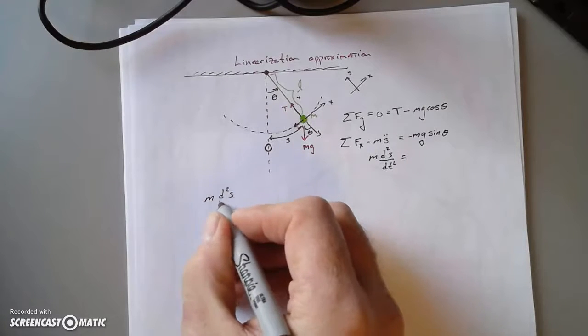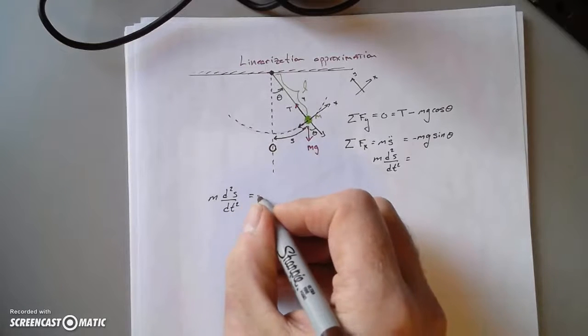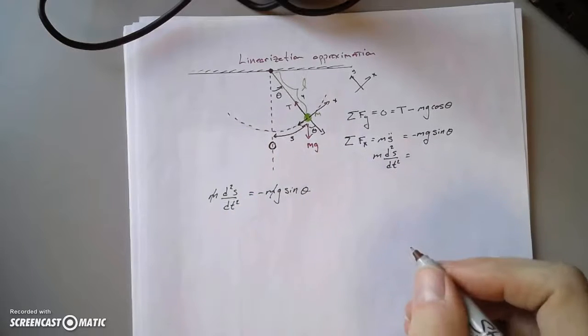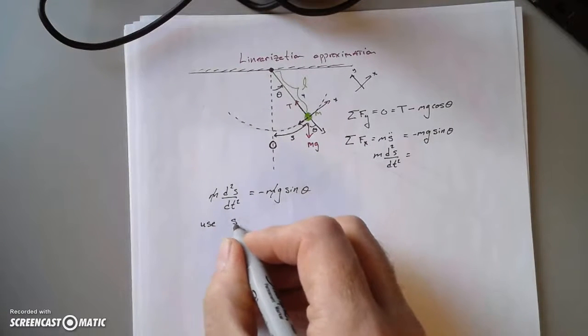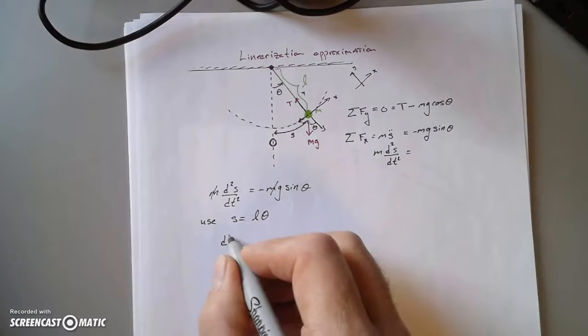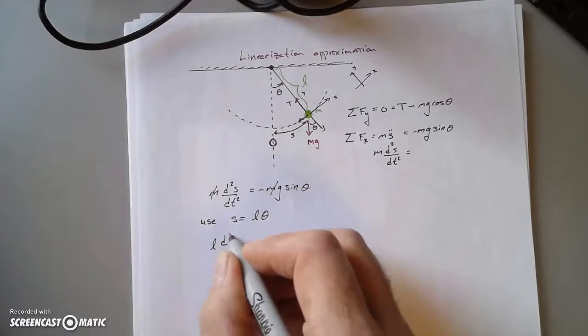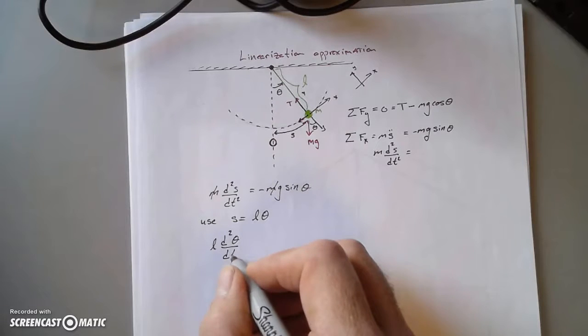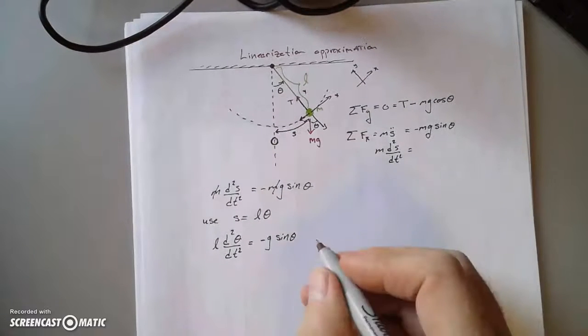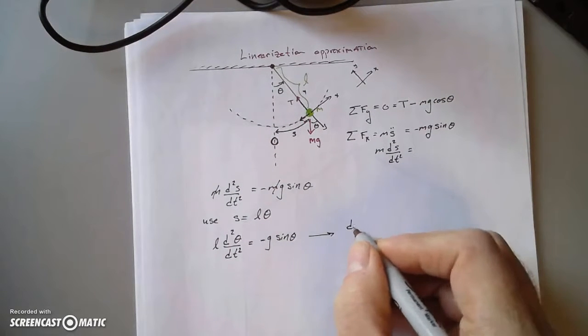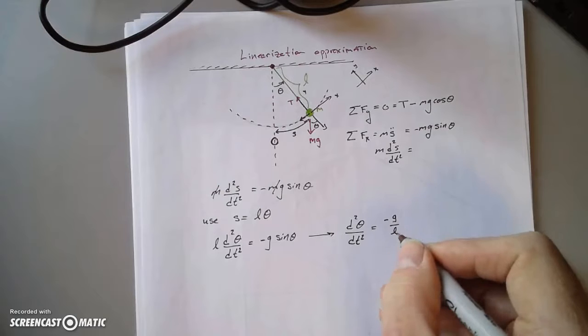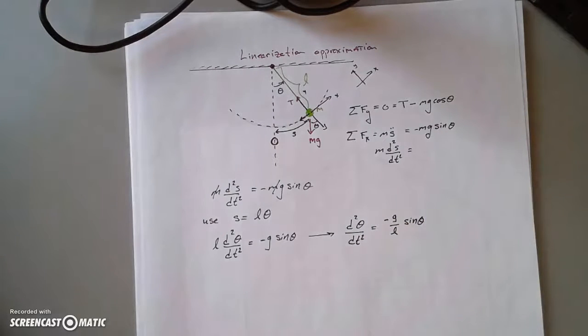All right. So this is something we can work with. So M second derivative of S with respect to T equals minus mg sine theta. We can cancel the M's. That's pretty normal. We can also use the fact that arc length is L times the subtended angle. So that means we pull the L out. There's an L second derivative of theta with respect to time equals minus g sine theta. We're just doing physics at this point. We can divide by L. So the second derivative of theta with respect to time is minus g over L sine theta.